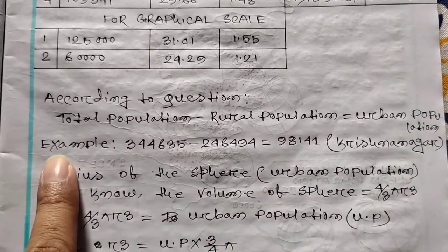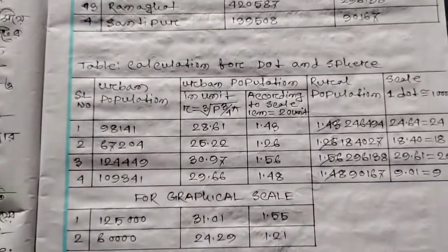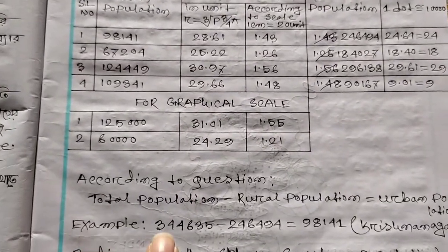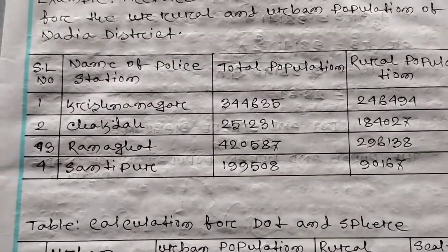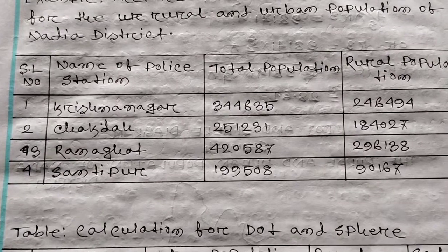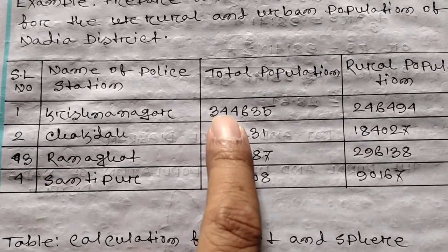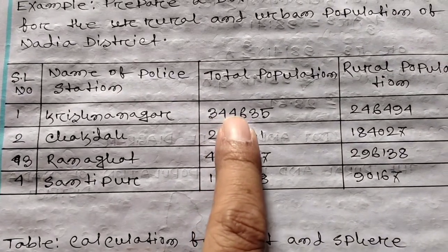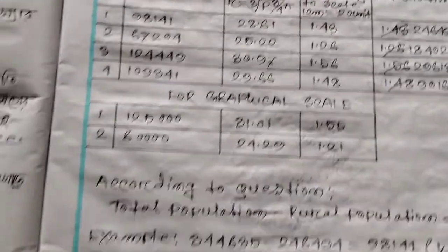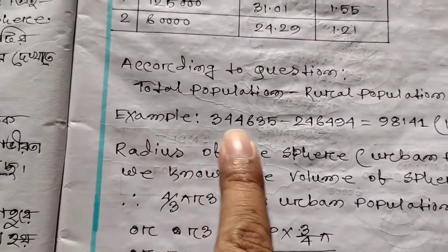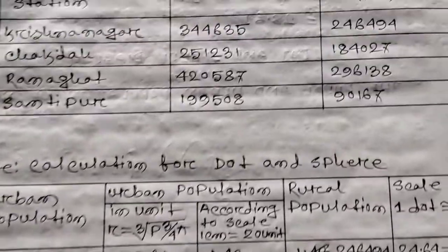Let's look at the example. If you look at the total population — the total population is 3, 4, 4, 6, 3, 5 — that is 3,44,635.